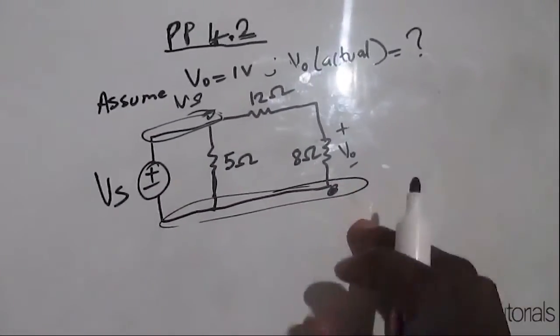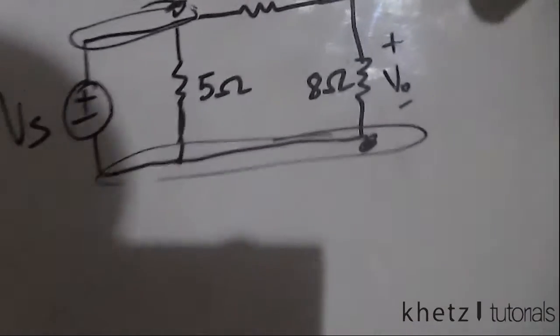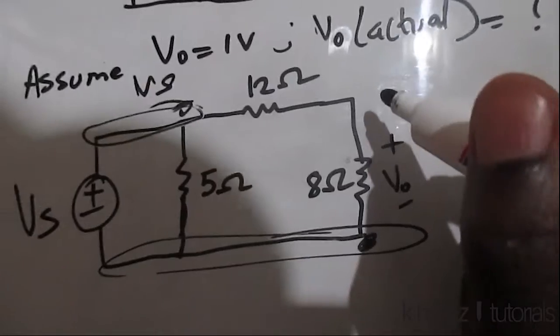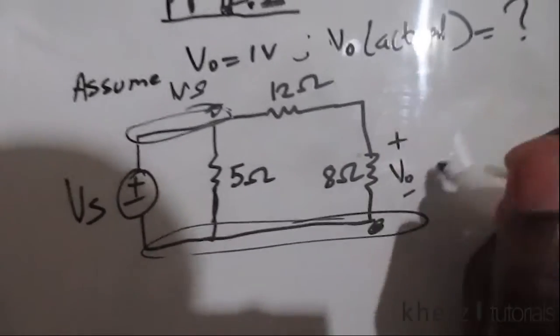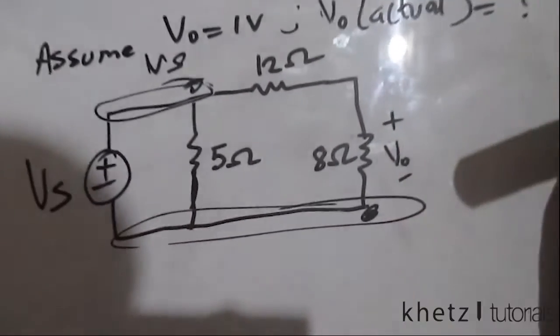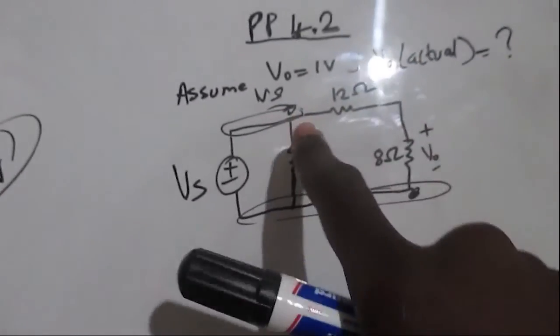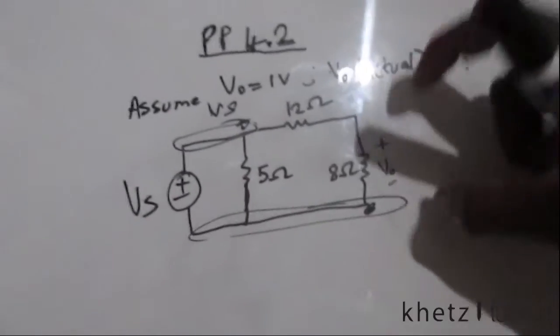To this bottom node here we have vs, but this vs has to be split among these two because these two are in series. When you have resistors in series, they actually split or divide the voltage. The current is the same. So we have vs from that point to that point.